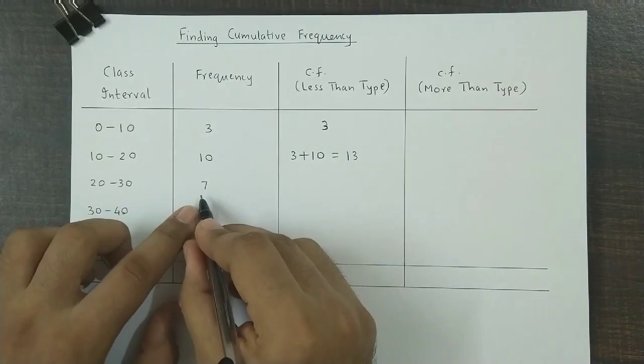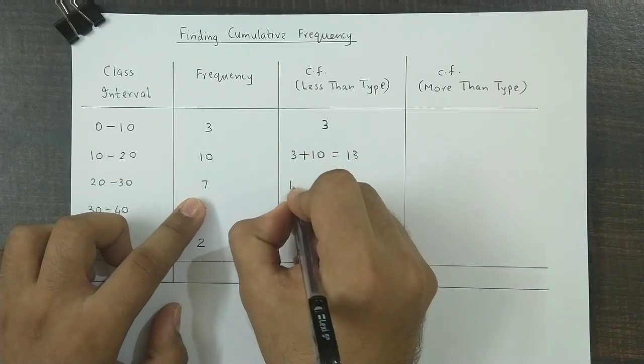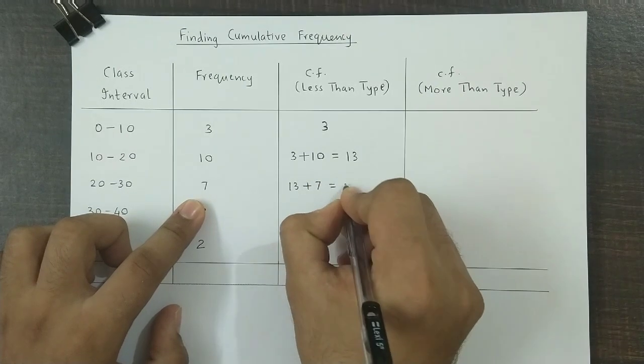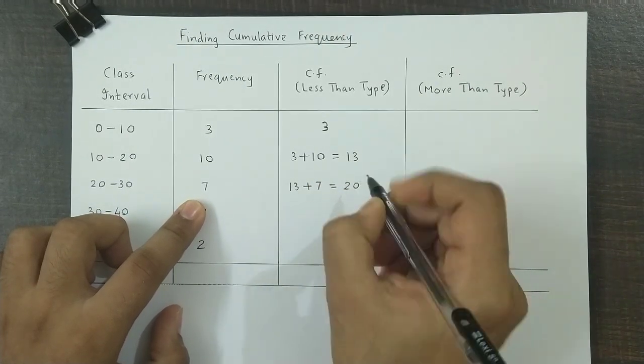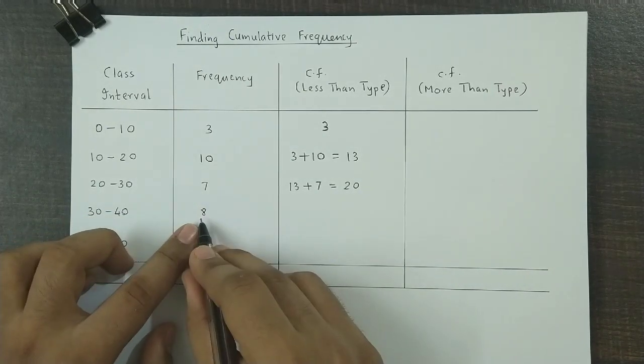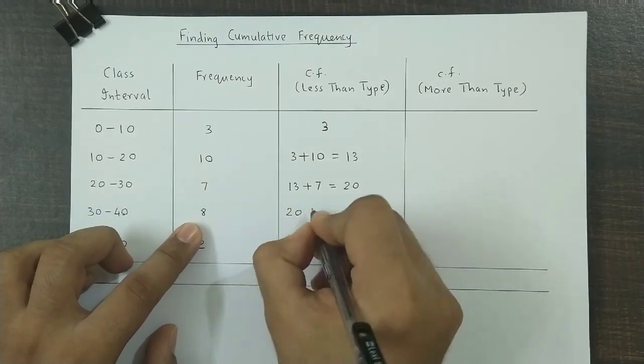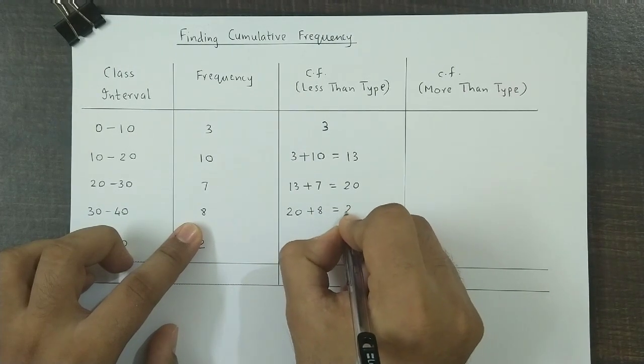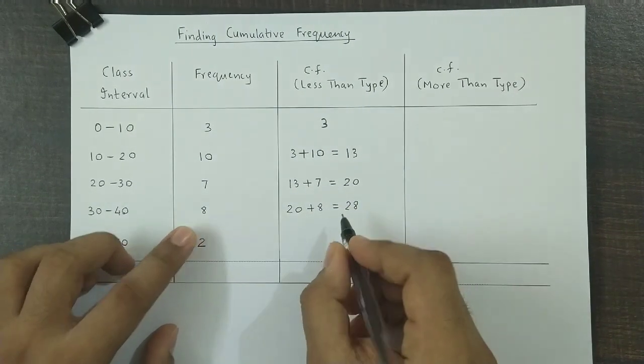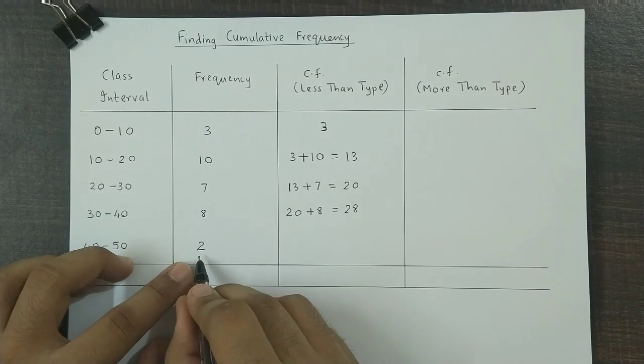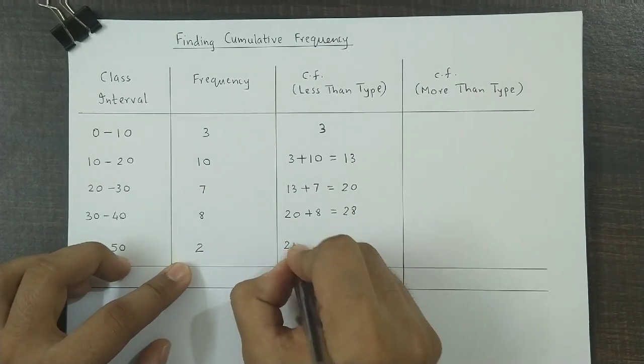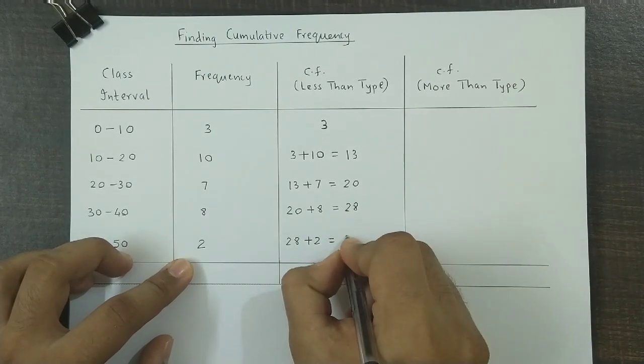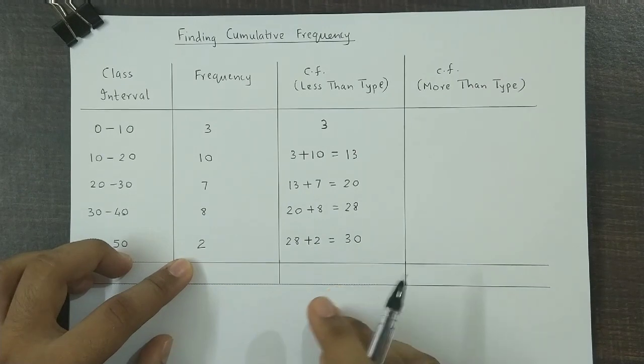Now this total 13 is added to the next frequency, that is 7, so we have 13 plus 7 which is equal to 20. Now 20 would be added to 8, so we have 20 plus 8 which results in 28. And lastly, 28 would be added with 2, so we have 28 plus 2, and that is equal to 30.